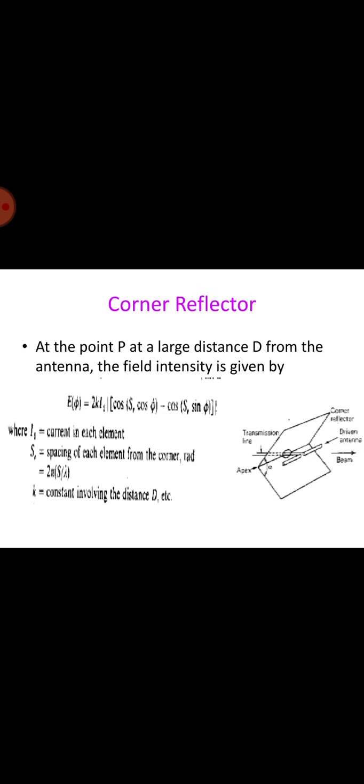At the point P, a large distance D from the antenna, the electric field intensity can be written as E equals 2k i1 times cos(sr cos phi) minus cos(sr sin phi), where i1 is the current in each element and sr is the spacing of each element from the corner. That will be given by 2 pi times s by lambda, where k is a constant involving the distance D.